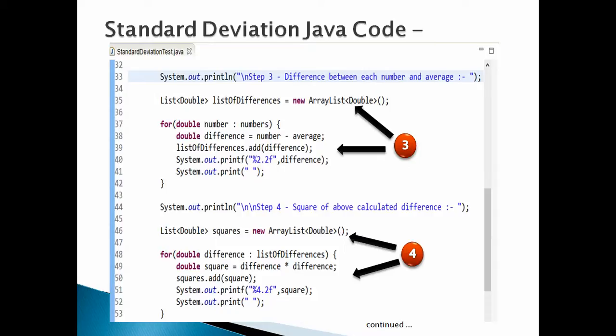Step 4: take square of above calculated difference. Create an ArrayList, say squares. This list will hold squares of each element present in the list of differences created above. Moving ahead.